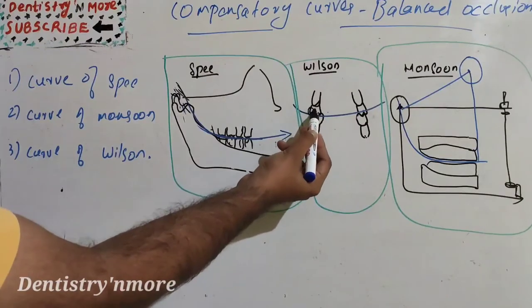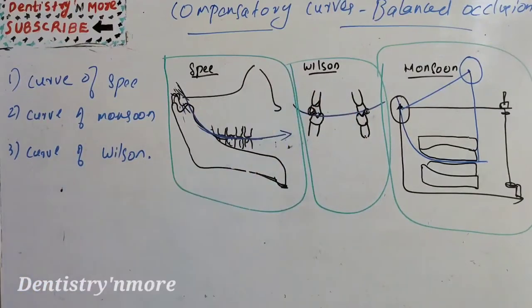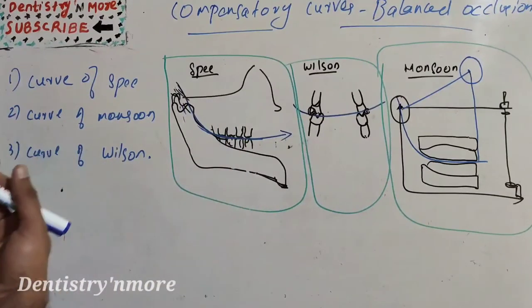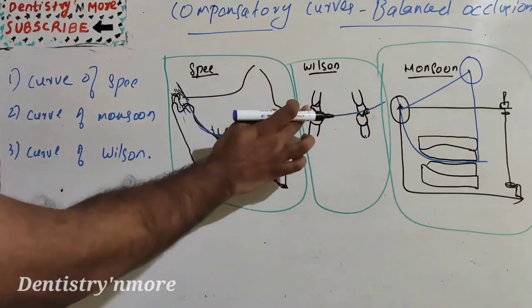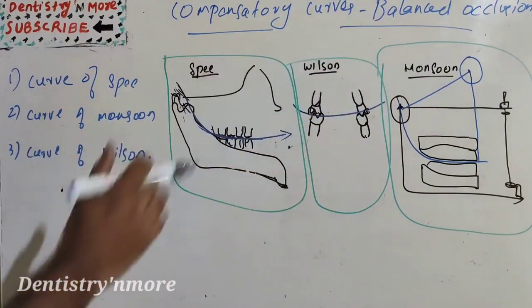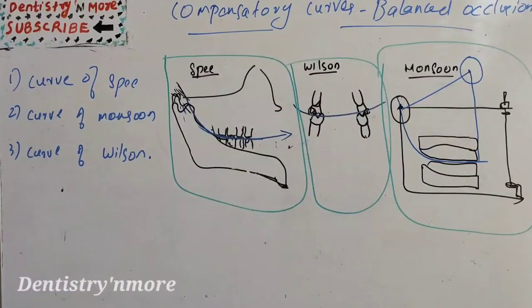This is the upper buccal cusp. When we have lateral movements on working side, we need to give a heavy occlusal contact on the upper buccal cusp. So that is the Wilson compensatory curve. It is basically for the arrangement of molars.